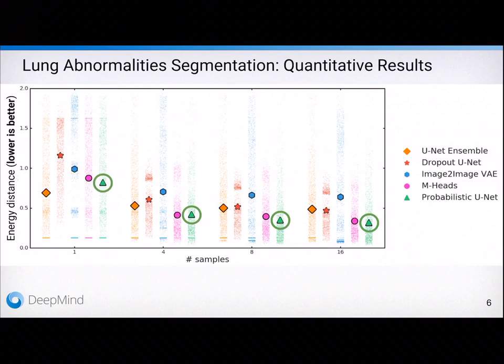The M-Heads model is a strong contender, but is not as well calibrated as our model. Recall that usually people use a deterministic model for segmentation, which, as evaluated in distribution space, is quite far behind in performance as can be seen by the orange bar here.